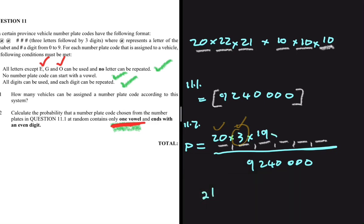For the digits, our only condition is that the last digit must be even — that is 0, 2, 4, 6, 8 — giving five possible options for the last position. Since repetition is allowed, the first and second digit positions can each have 10 options.